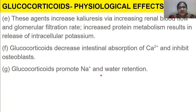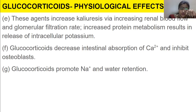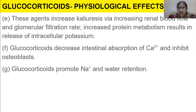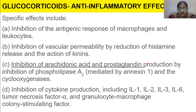These agents increase calciuresis — 'cali' meaning potassium and 'uresis' referring to urine — so a lot of potassium is released into the urine. This occurs via increased renal blood flow and glomerular filtration rate; potassium-protein metabolism releases intracellular potassium. Glucocorticoids decrease intestinal absorption of calcium and inhibit osteoblasts, which are the cells that produce bone. They also promote sodium and water retention, causing edema.